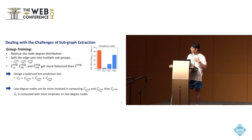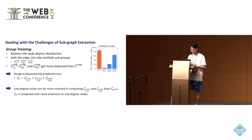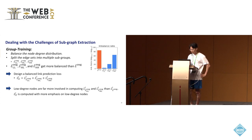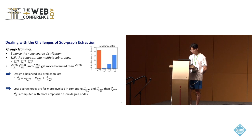To mitigate the second challenge of imbalanced node degree distribution, we propose a group training strategy. The key idea is to balance the node degree distribution by splitting the edge set into multiple subgroups: LL group (edges between two low-degree nodes), HL group (edges between one low-degree and one high-degree node), and HH group. We observe that the split groups become more balanced. Based on this, we design a balanced link prediction loss so that low-degree nodes are far more involved in computing the loss, leading to more emphasis on low-degree nodes during training.